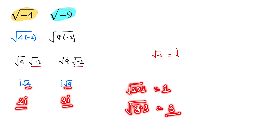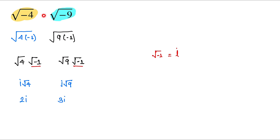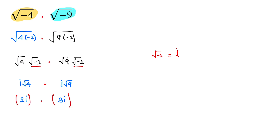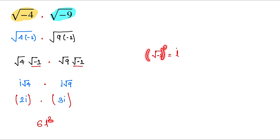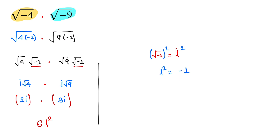So now we write 2i and 3i. We multiply 2i and 3i, which gives 6i squared — 2 into 3 is 6, and i into i is i squared. The value of i is under root minus 1, so i squared is equal to minus 1.